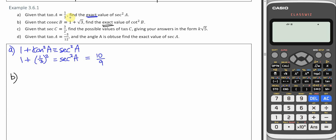It's just easier to use the identity that links cosec with cot. And that is 1 plus cot squared B is cosec squared B. Let's put in what we know.